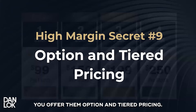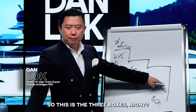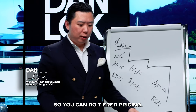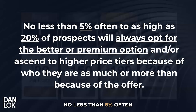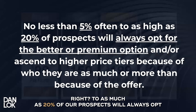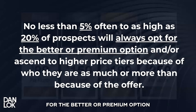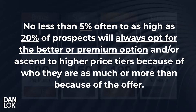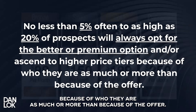You offer them option and tier pricing — the three boxes: good, better, and best. You can do tier pricing. No less than 5%, often right, to as much as 20% of your prospects are always up for a better or premium option, and they ascend to higher price tiers because of who they are as much as — or more than — because of the offer itself.